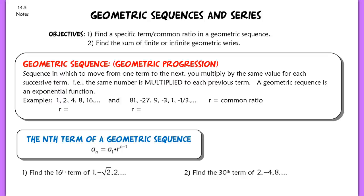This lesson is for section 14.5. We're going to be looking at geometric sequences and series. Specifically, we're going to find terms or the common ratio for a geometric sequence, and we're also going to be looking at the sum of finite or infinite geometric series. We'll be doing partial sums as well as finding what a series might converge to.